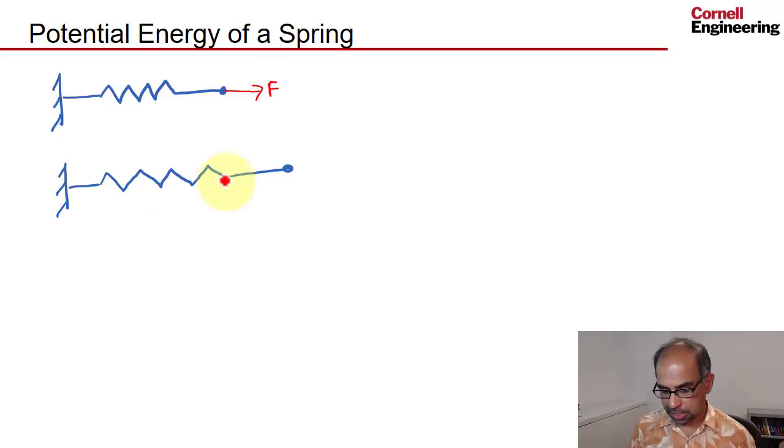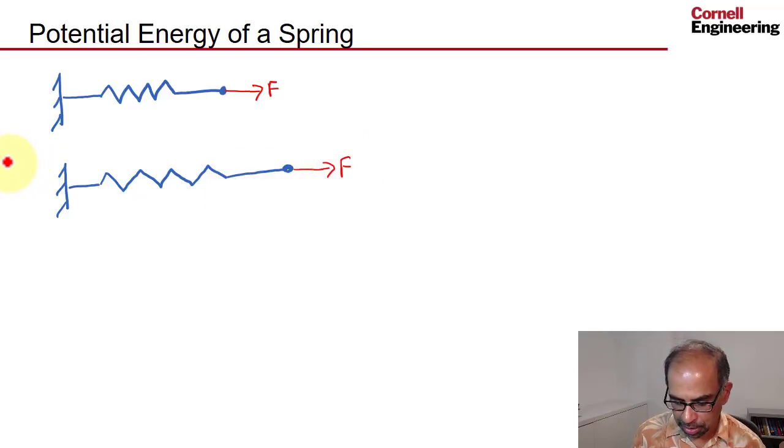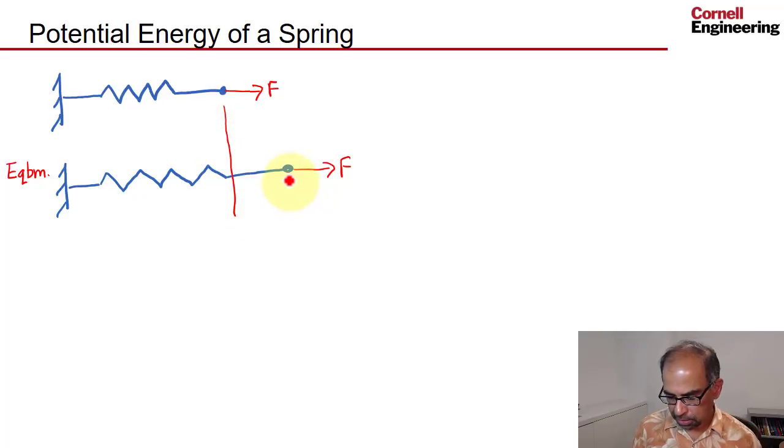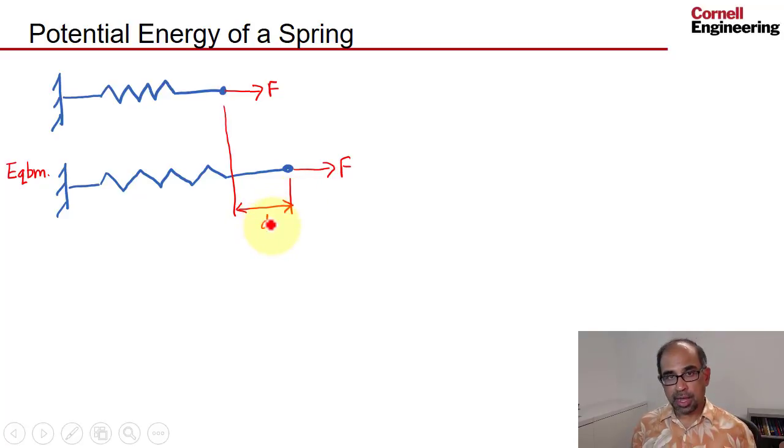Under the influence of that force, it's going to extend like that. So I have my force F here, and let's say that's its equilibrium state. I'll abbreviate equilibrium as EQBM. Let's say the spring has, under the effect of the force F, extended by an amount equal to D.